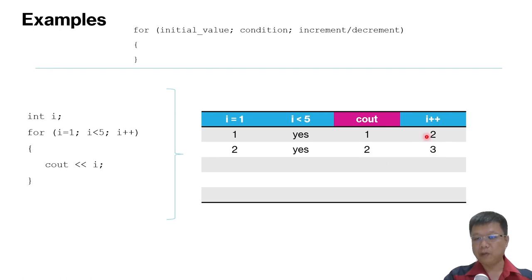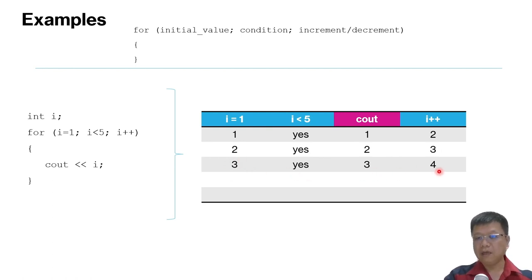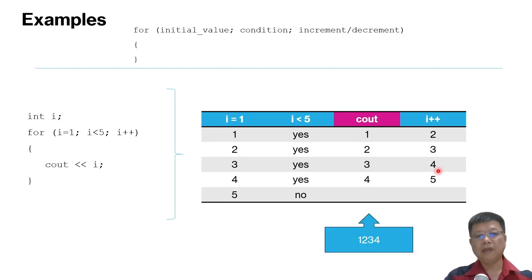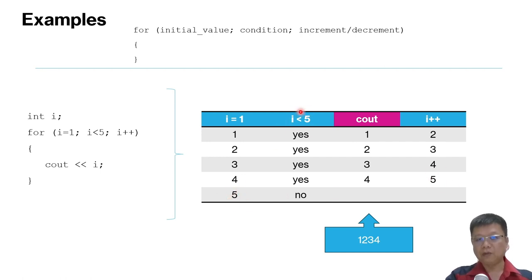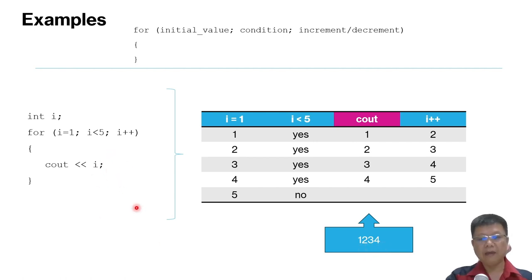The process repeats until i reaches 5. When i++ gives 5, it does not fulfill the condition i < 5, so the loop stops. The cout values are 1, 2, 3, 4. Since there is no spacing and no end line, they are all displayed in one row combined: 1234.